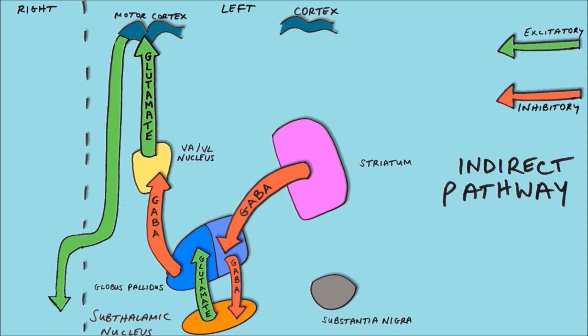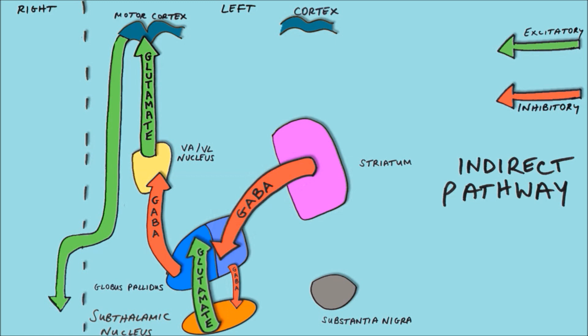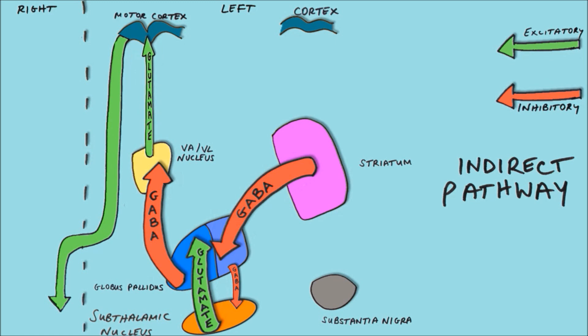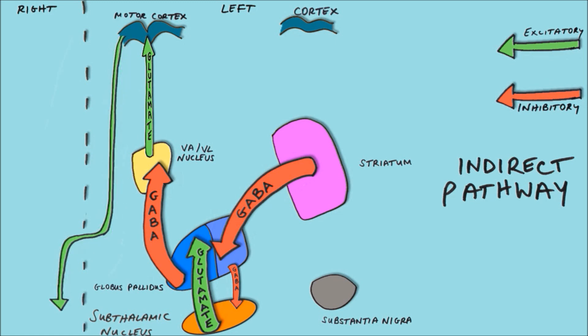So if we increase the activity of the striatum, the striatum is able to inhibit the lateral globus pallidus to a greater extent. This reduces its activity, so it inhibits the subthalamic nucleus less, allowing the subthalamic nucleus to stimulate the medial globus pallidus more. This increases the activity of the medial globus pallidus, making it inhibit the VAVL nucleus to a greater extent, reducing the amount the VAVL nucleus excites the motor cortex, and ultimately leading to reduced motor output.